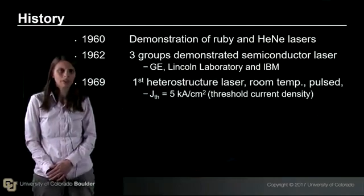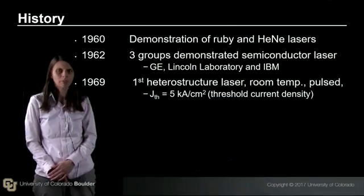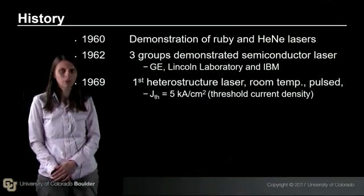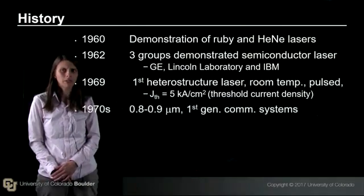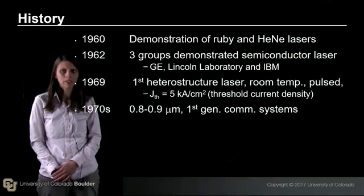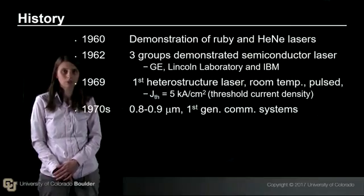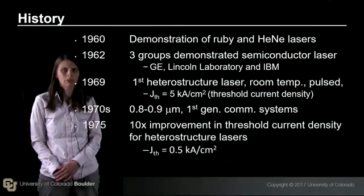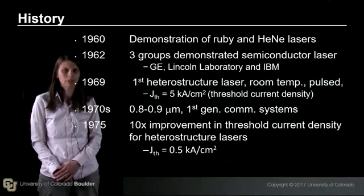By 1969, the first heterostructured laser, made out of several materials, was demonstrated at room temperature pulsed with a threshold current of 5 kiloamps per centimeter squared. By the 1970s, 0.8 and 0.9 micron semiconductor lasers were being deployed in the first generation communication systems. And by 1975, there had been a 10x improvement in the threshold current density for heterostructured lasers, bringing the current density down to 0.5 kiloamps per centimeter squared.